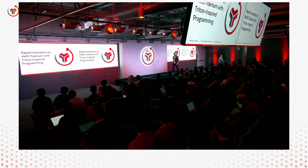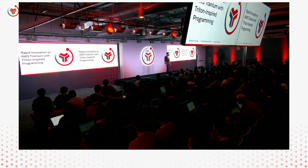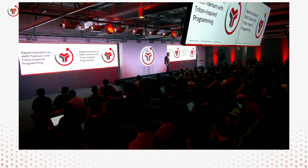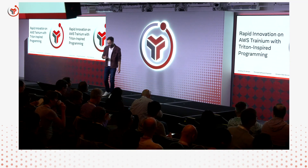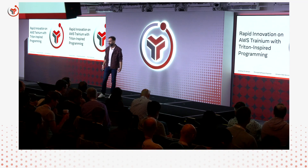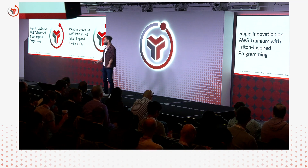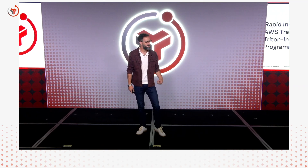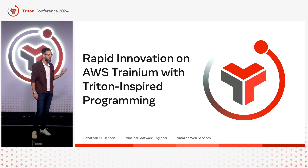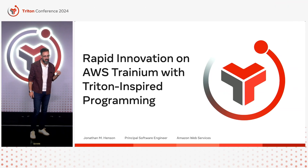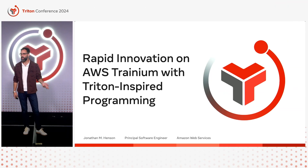Hi, I'm Jonathan Henson. I'm from AWS. I'm a tech lead on the Neuron Kernel Interface, which we'll be talking about here. At AWS, we've built the Trainium and Inferentia instance families for Amazon EC2, purpose-built for accelerating deep learning workloads.